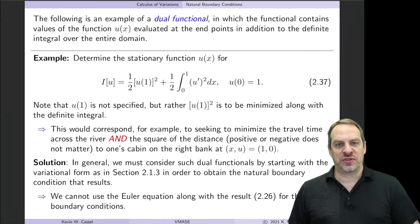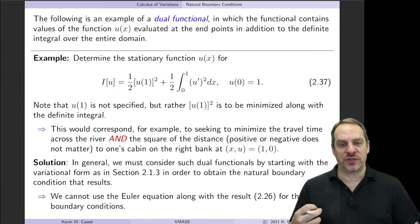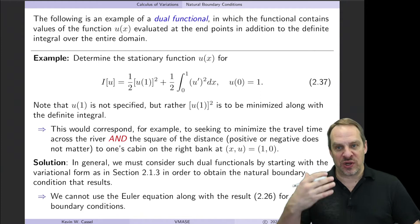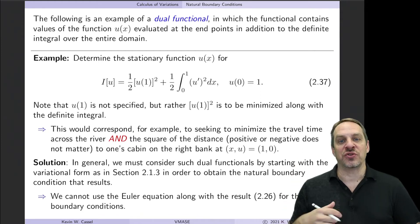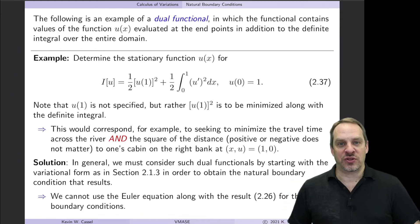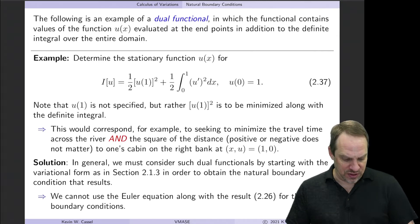In the previous video, we introduced the idea of natural boundary conditions, where we don't know the value of u at the endpoints of our domain, say x0 and x1. Those boundary conditions arose naturally from the derivation of the Euler equation. Here we're going to look at a situation where the natural boundary condition arises in a slightly different setting.